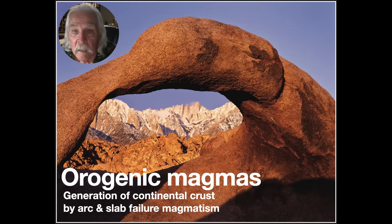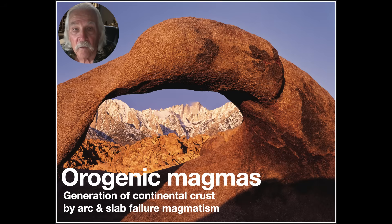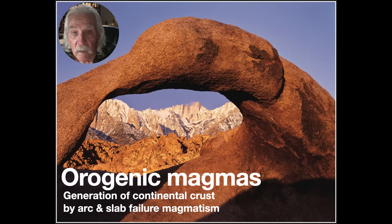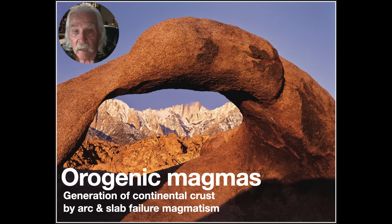Good morning again. In this talk we use the data from the Peninsular Ranges batholith of the previous talk, combined with isotopic data from the Sierra Nevadan batholith, to show that most of the plutons were not generated by arc magmatism as commonly believed, but instead originated by a different process from the mantle and are the missing link in the formation of continental crust.